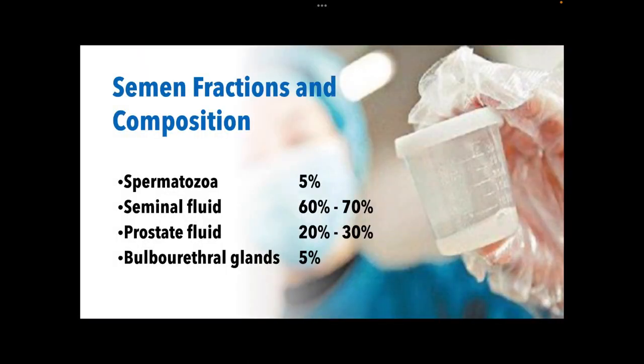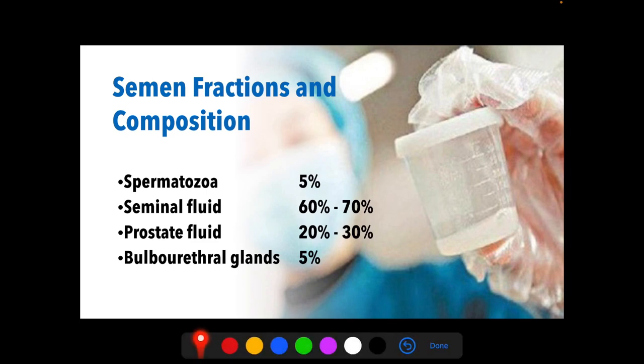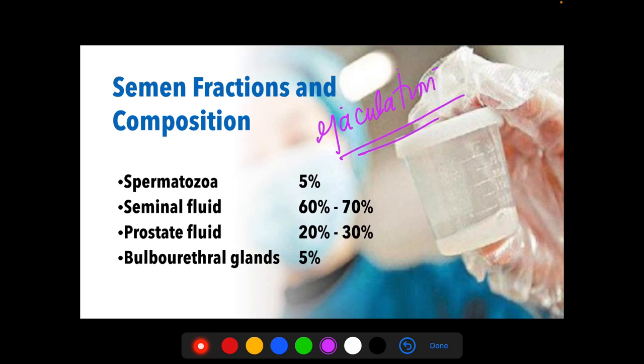We have the semen fractions and their composition. Each fraction differs in its composition, and the mixing of all four fractions during ejaculation is very important for the production of a normal semen specimen. Ejaculation refers to the release of semen from the male reproductive tract as a result of orgasm.